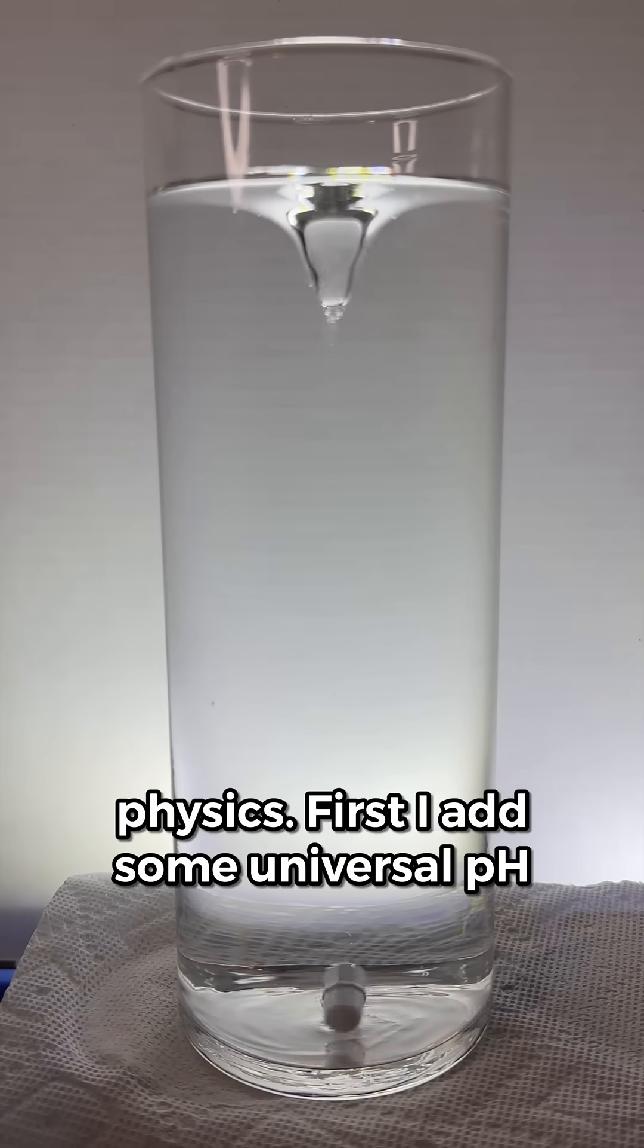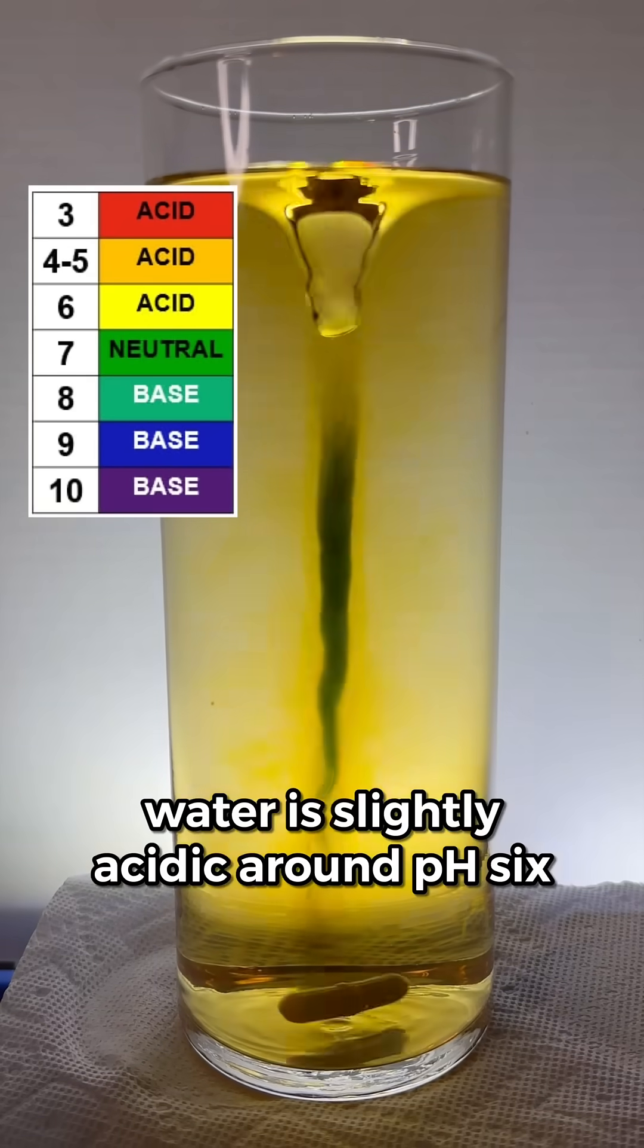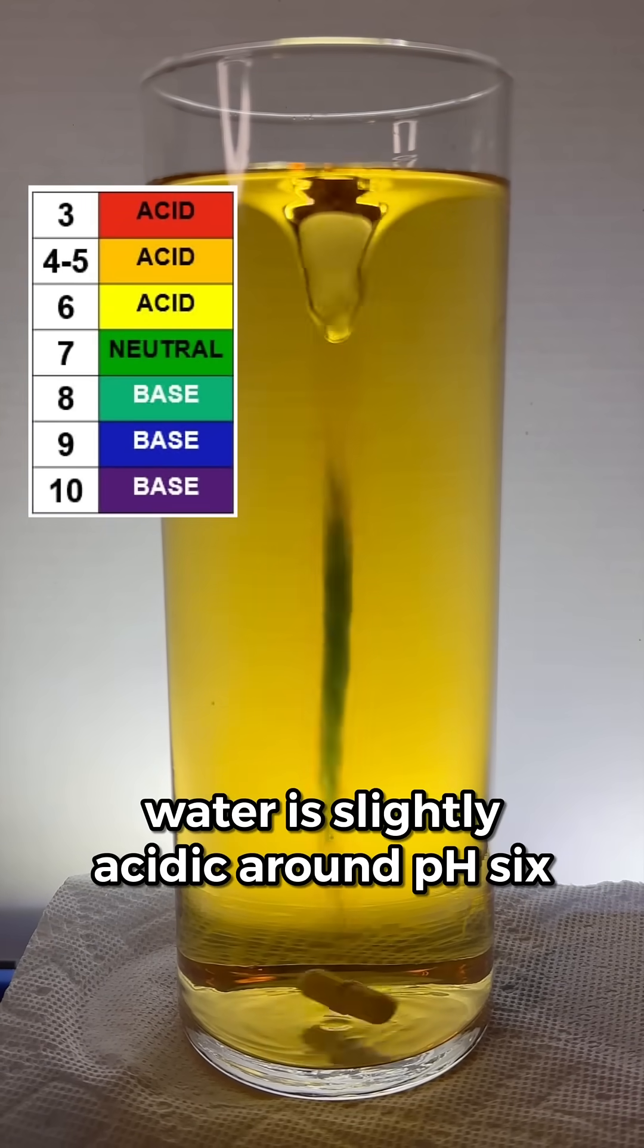First, I add some universal pH indicator to a cylinder of water. The solution turns yellow, meaning the water is slightly acidic, around pH 6.